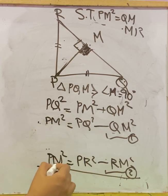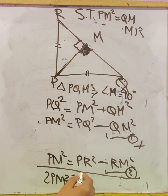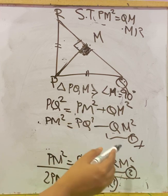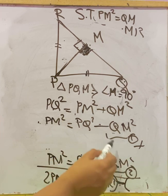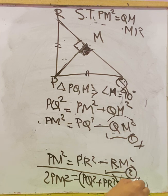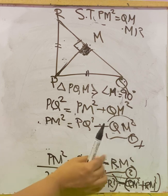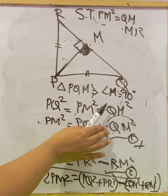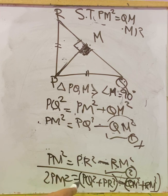Adding equations (1) and (2): PM² + PM² = (PQ² − QM²) + (PR² − RM²). This gives 2PM² = (PQ² + PR²) − (QM² + RM²). The positive values PQ² + PR² are grouped in one bracket, and the negatives QM² + RM² in another.